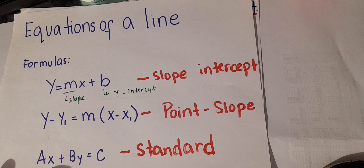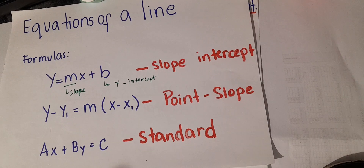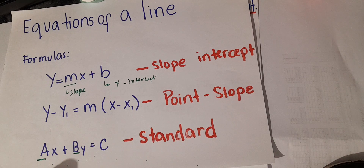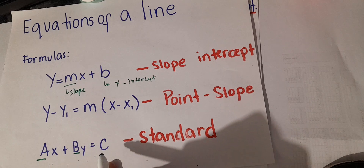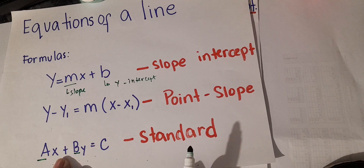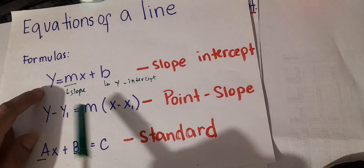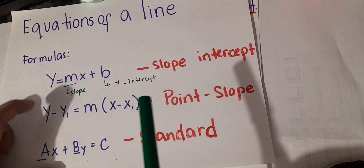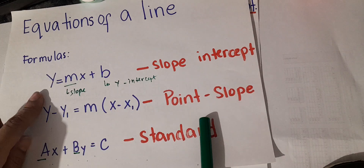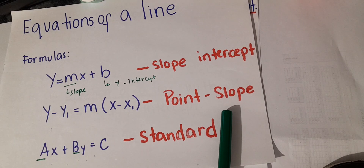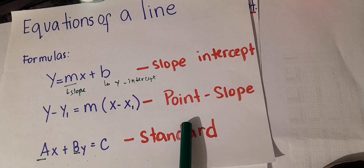If you have an equation and it is not written in slope-intercept form, it may be written in standard form: ax plus by is equal to c, where a and b are coefficients and c is the constant. If we have this kind of equation, we can rewrite it in the form y equals mx plus b. Take note that y should be alone — no number beside it. If there is a number, you have to eliminate it.